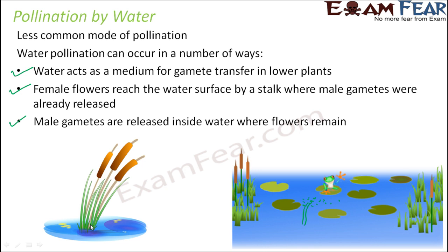It is not necessary that all aquatic plants are water-pollinated. There are certain plants where the flowers are present outside the water surface — the roots and stem may be inside the water but the flower is outside. In those cases, they can be pollinated by insects. So water pollination applies only to plants whose reproductive structures are actually submerged or at the water surface.